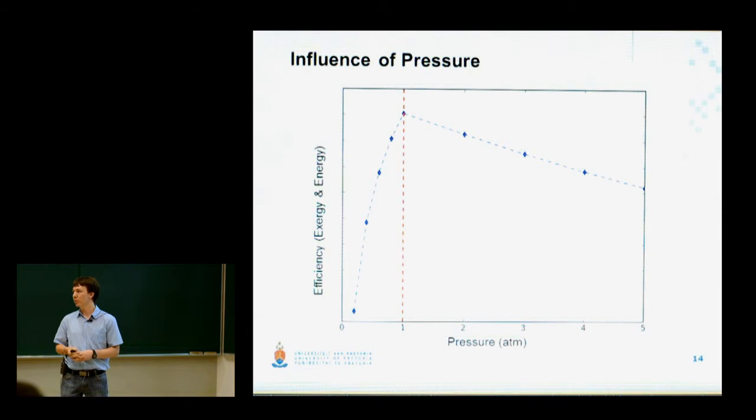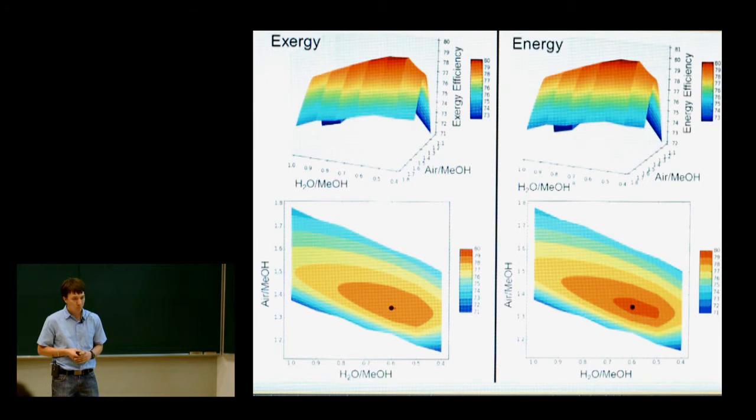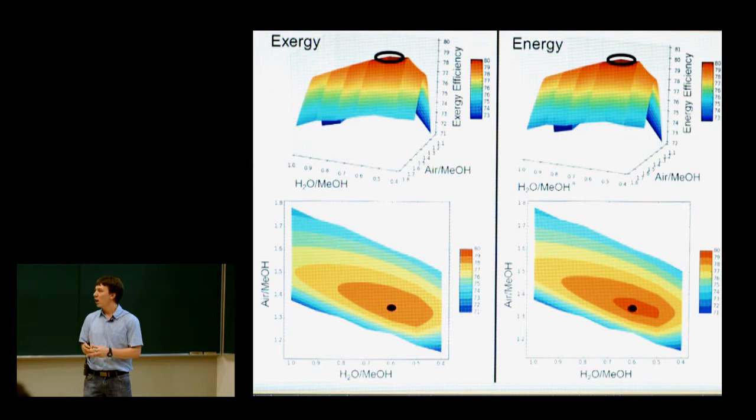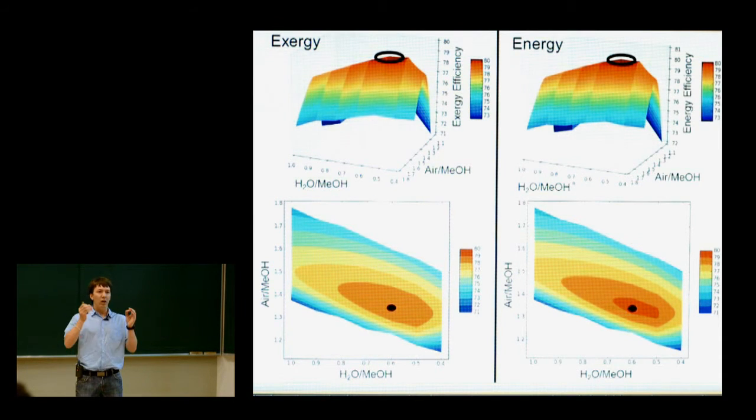But this leaves us now with the two remaining variables: the water methanol feed ratio and the air methanol feed ratio. Their influence on the efficiencies are given on the following graphs. On the left-hand side we have the exergy efficiency plots and on the right-hand side the energy efficiency plots, with the 3D plots on the top and a top view of these 3D plots on the bottom. Now what I want you to see from these graphs is first of all that an optimal point was reached within the studied parameters. But secondly is how closely these graphs look in shape and size. In fact, they are so close that they predicted the exact same optimal conditions.